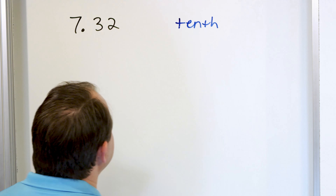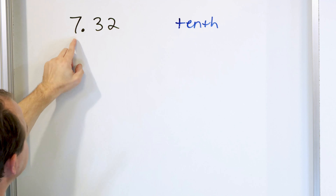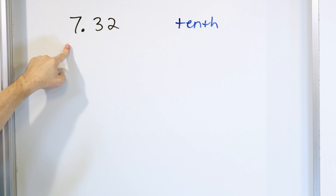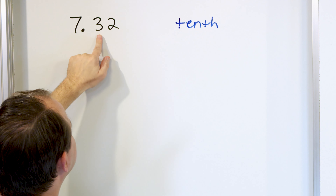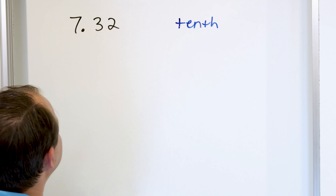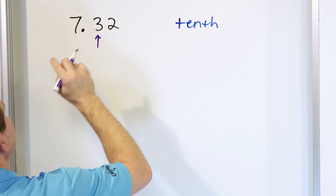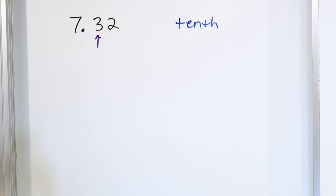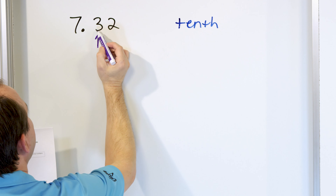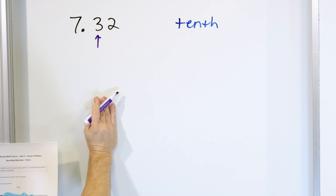This is a major difference from the last lesson. Before we were only looking at the whole number, going up to eight or going down to seven. Here we're actually rounding to the nearest tenth, which means we're rounding to this position. Put a little arrow under here — this is the number we're rounding to. It's going to either go up to a four or stay down at a three.